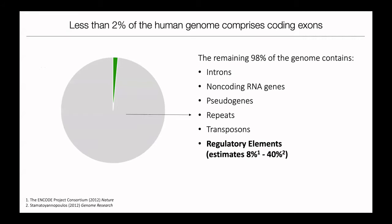If you look at the human genome, only 2% has coding exons which code for proteins, while the remaining 98% contains many different kinds of things. Our genes are very large, so we have very long introns. We also have non-coding RNA genes, pseudogenes, and half of our genome is repeats — different kinds of repeats including SINEs, LINEs, and different transposons.